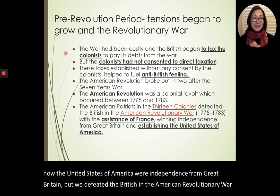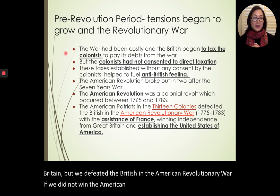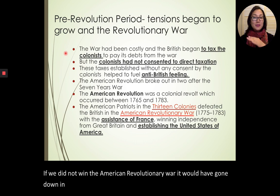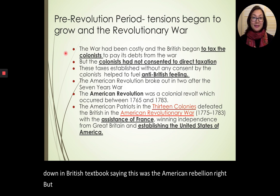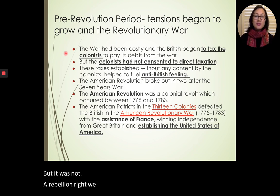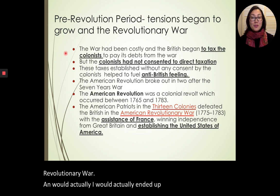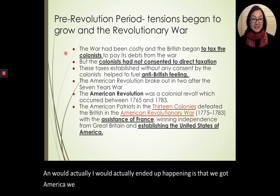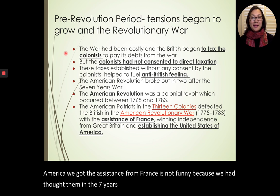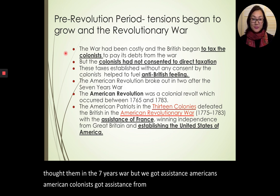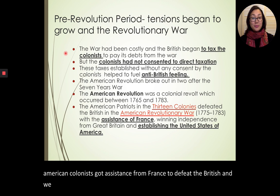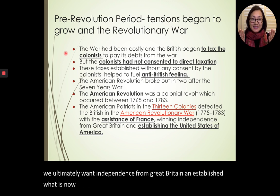If we had not won the American Revolutionary War, it would have gone down in British textbooks as the American rebellion. But we ultimately won. What actually ended up happening is that we got assistance from France — isn't that funny, because we had fought them in the Seven Years' War. American colonists got assistance from France to defeat the British, and we ultimately won independence from Great Britain and established what is now known as the United States of America.